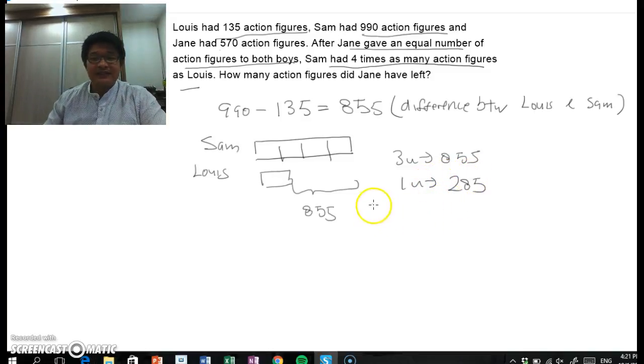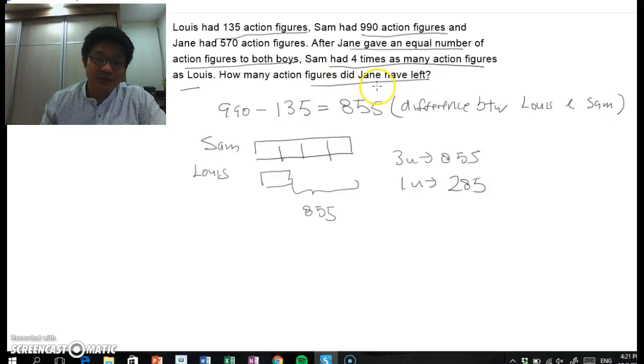Now, what's next is we need to find out how many action figures did Jane have left. But in order to do that, we must find out how many action figures she gave away. So if 1 unit is 285, that means Louis right now has 285.